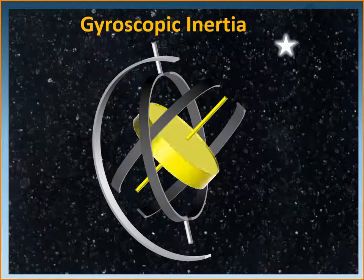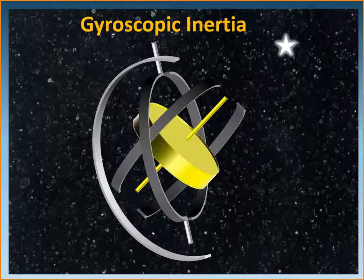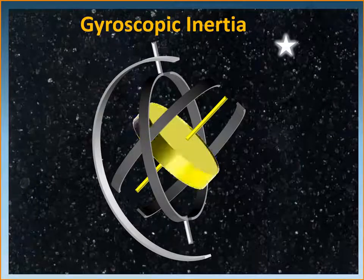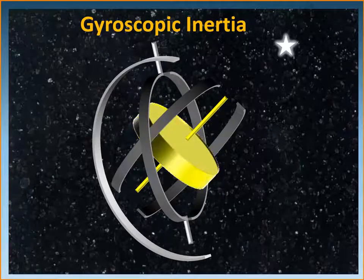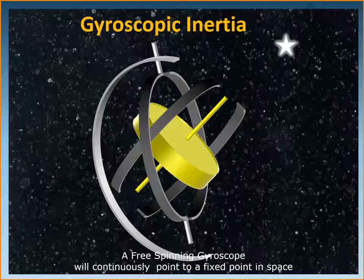Once the gyroscope gains enough RPM, based on the mass of the rotor — this is where the principle of angular momentum comes in — it can be made to point in a fixed direction. Imagine that if the gyroscope gains the maximum RPM it requires and is then made to point towards a star, which is a fixed direction, it shall continue to point towards that star as long as that RPM is maintained.